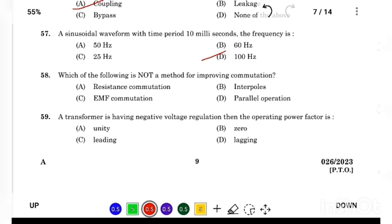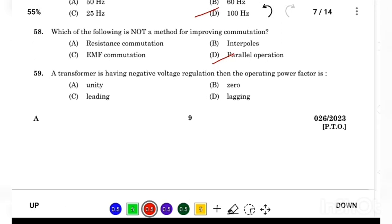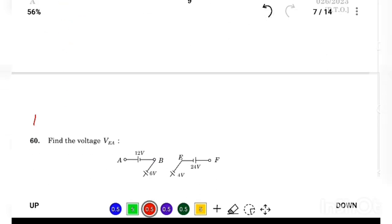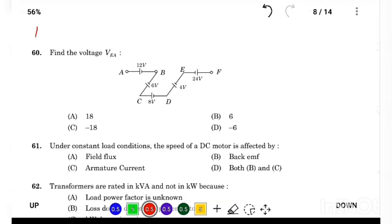Which of the following is not a method for improving commutation? Answer Option D, parallel operation. A transformer is having negative voltage regulation, then the operating power factor is Answer Option C, leading. Find the voltage VEA, Answer Option C, minus 18.